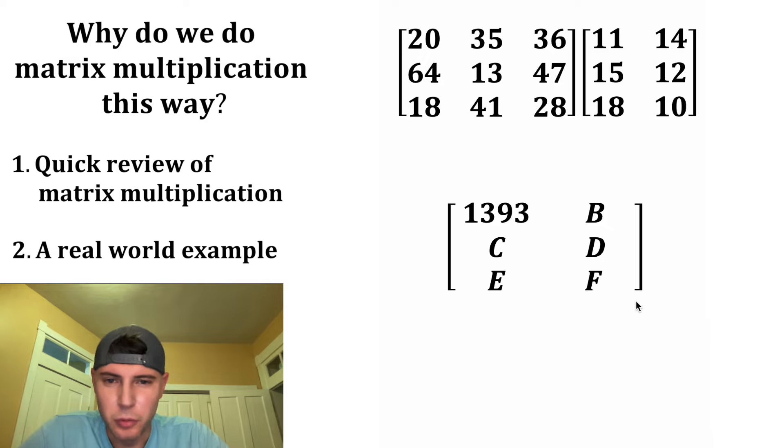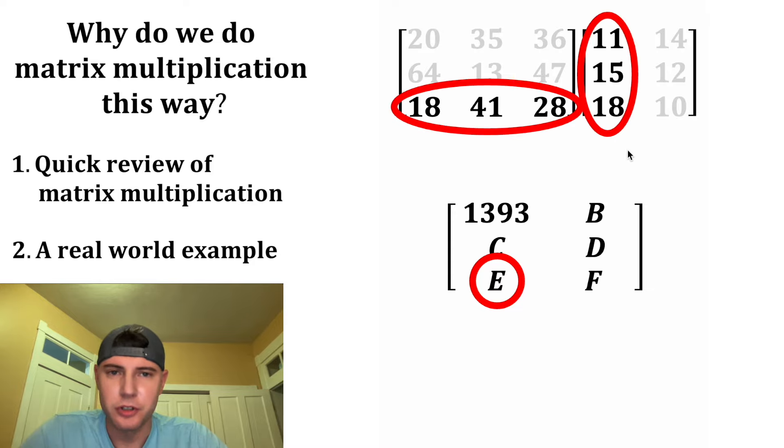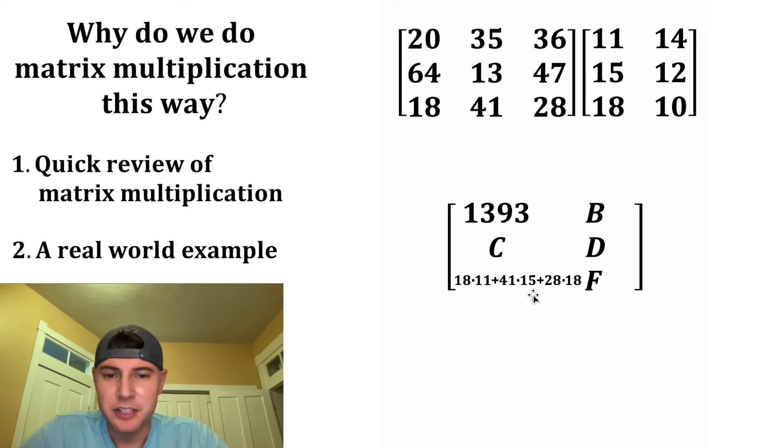And we go through all these, but let's just do one of them. Let's do the E. This is the third row, first column. So we're going to go to the third row, first column. And for this one, we'll do the 18 times the 11 plus 41 times 15 plus 28 times 18. And after we simplify all of this, it's 1,317.